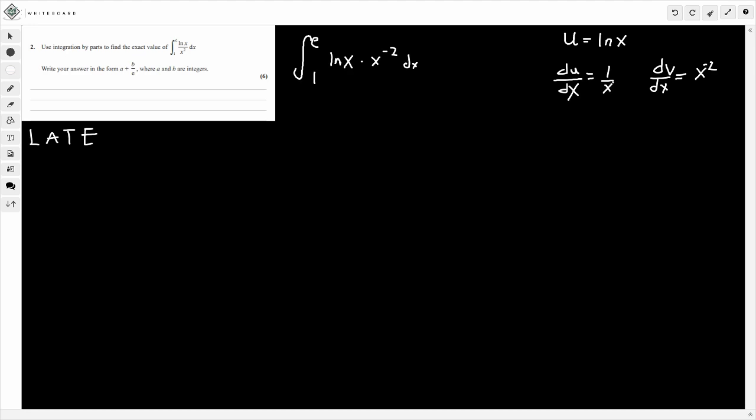Now we need to integrate this dv by dx to get just v. So the integral of x to the minus 2. We're going to add 1 to the power, divide by the new power. So this will be the same as just minus 1 over x, because that would be x to the minus 1. So we've got the information we need. Now we need to use the formula for our bi-parts and let's carry on with the integral from there.